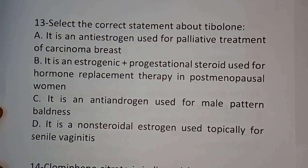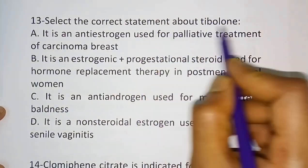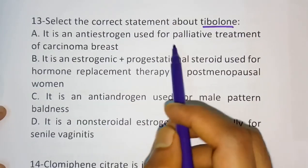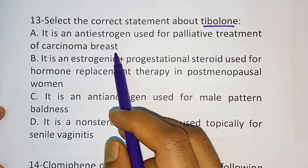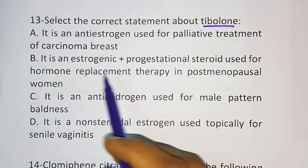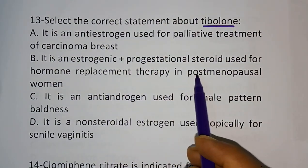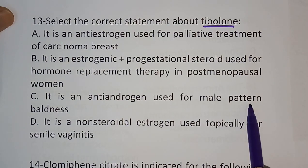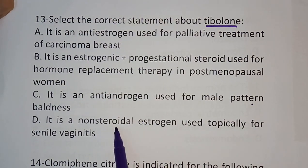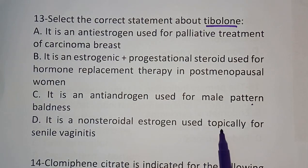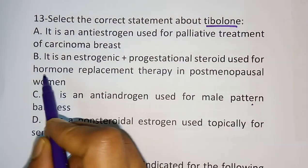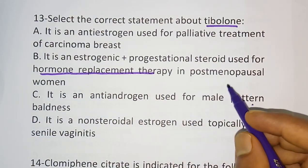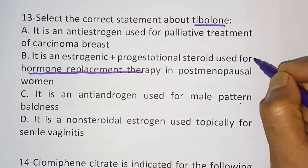Question number 13: Select the correct statement about tibolone. Options: A) It is an anti-estrogen used for palliative treatment of carcinoma breast. B) It is an estrogenic progesterational steroid used for hormone replacement therapy in postmenopausal women. C) It is an anti-androgen used for male-pattern baldness. D) It is a non-steroidal estrogen used topically for senile vaginitis. The correct answer is option B.